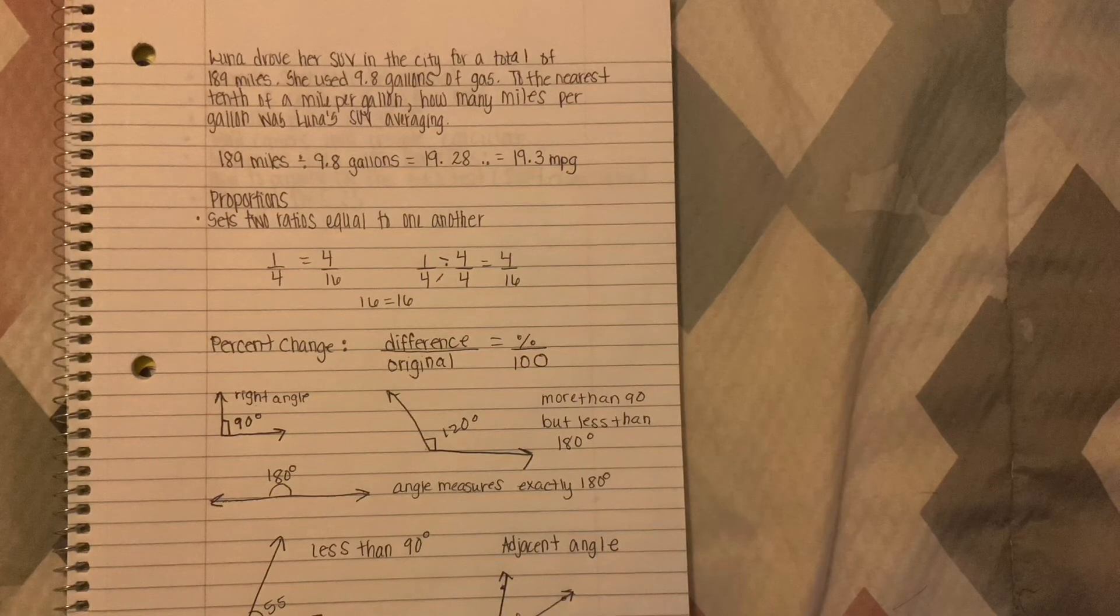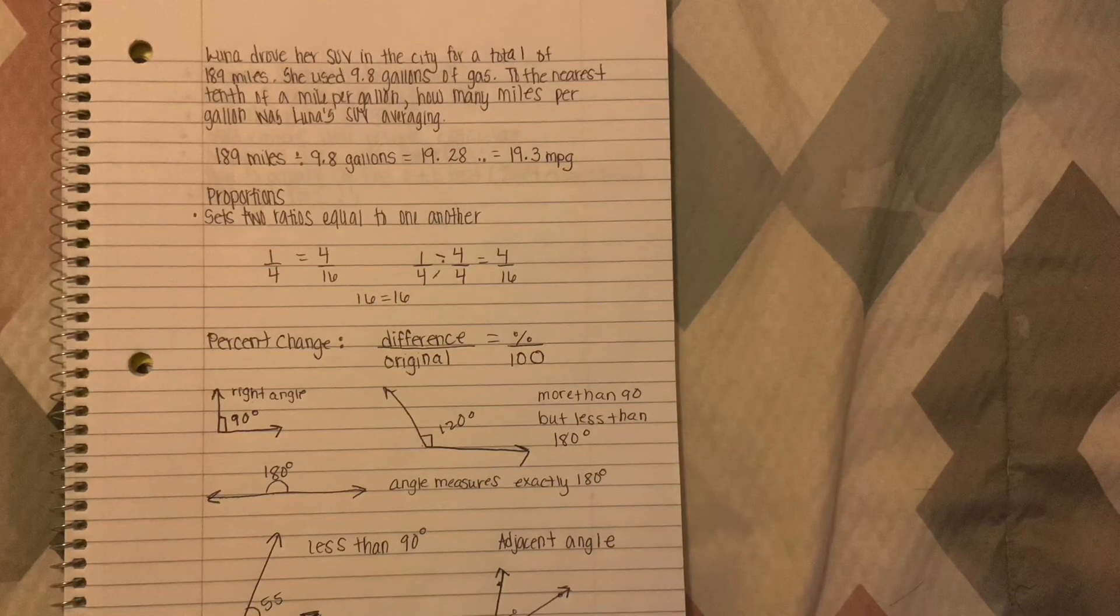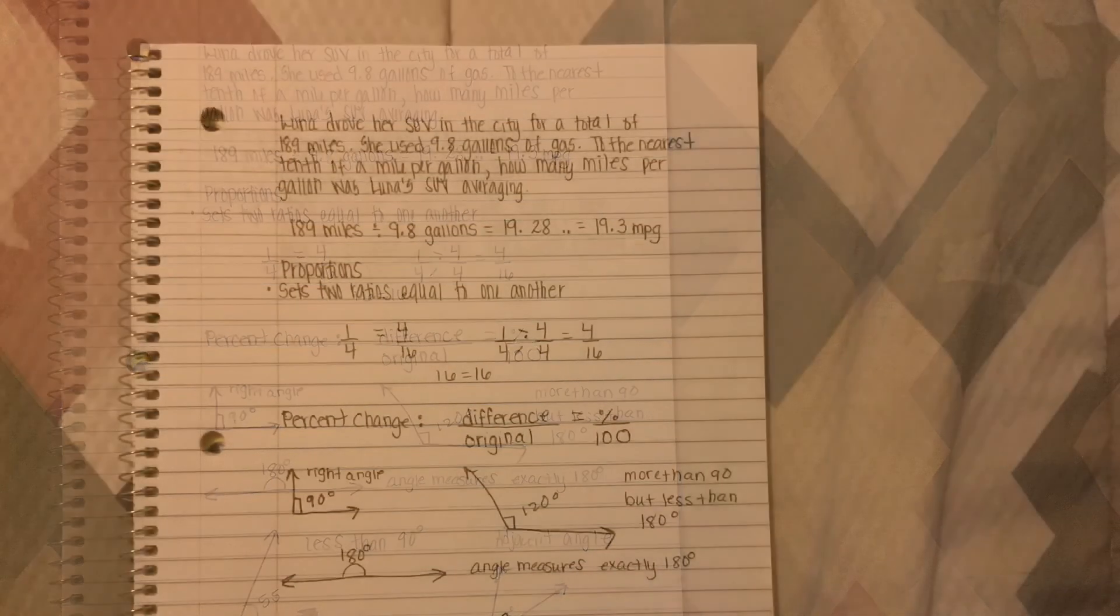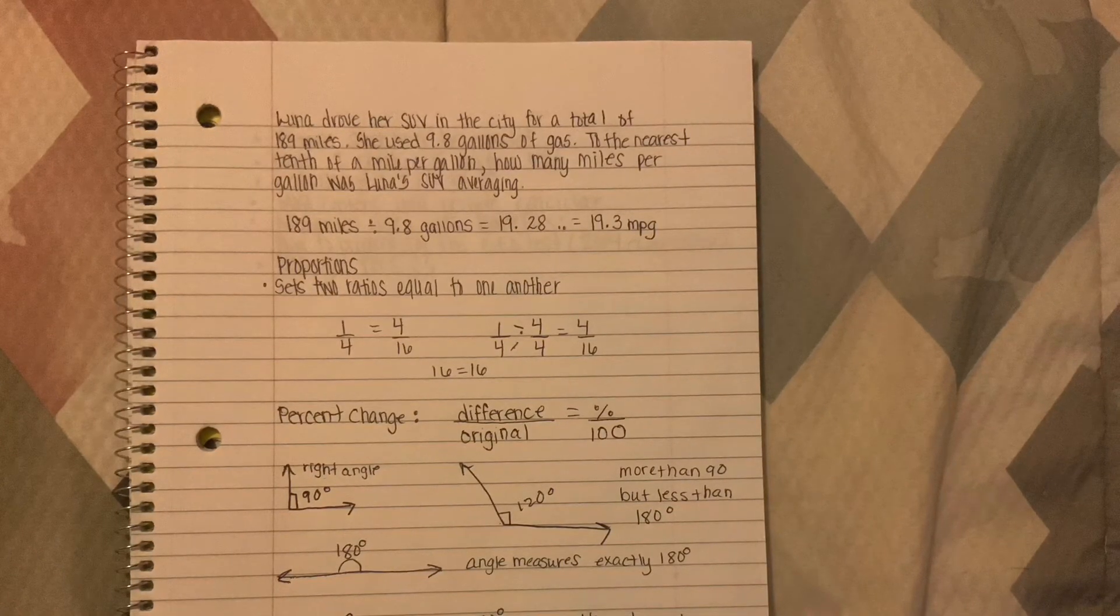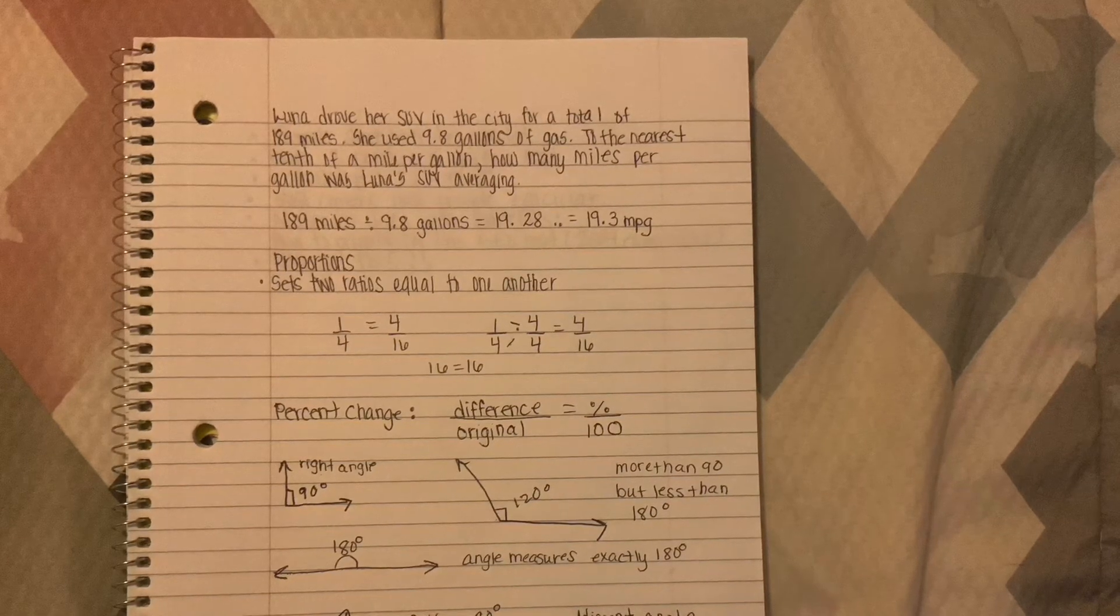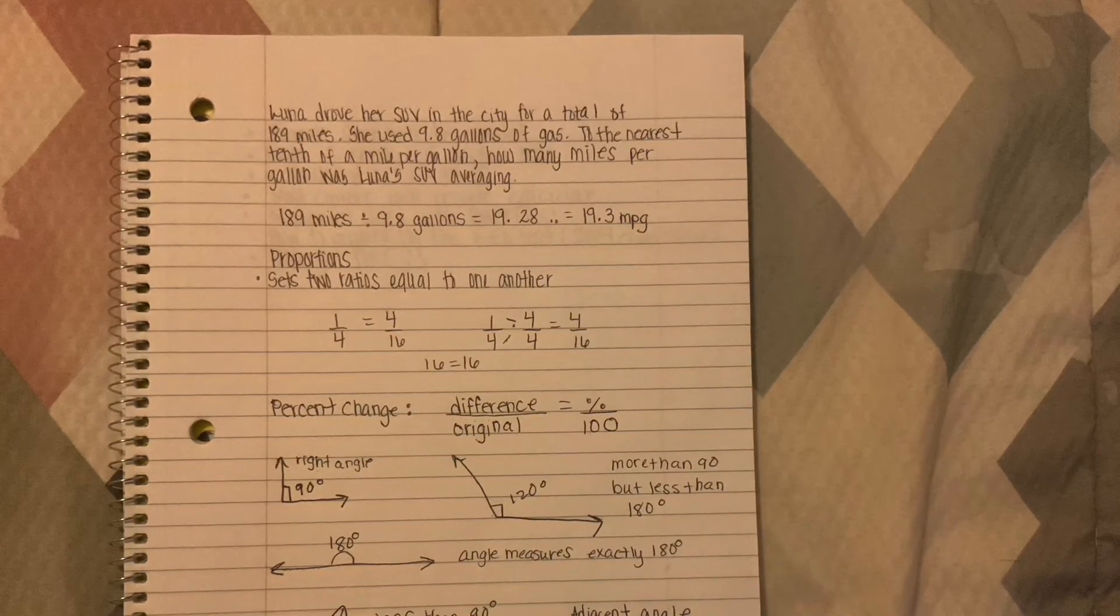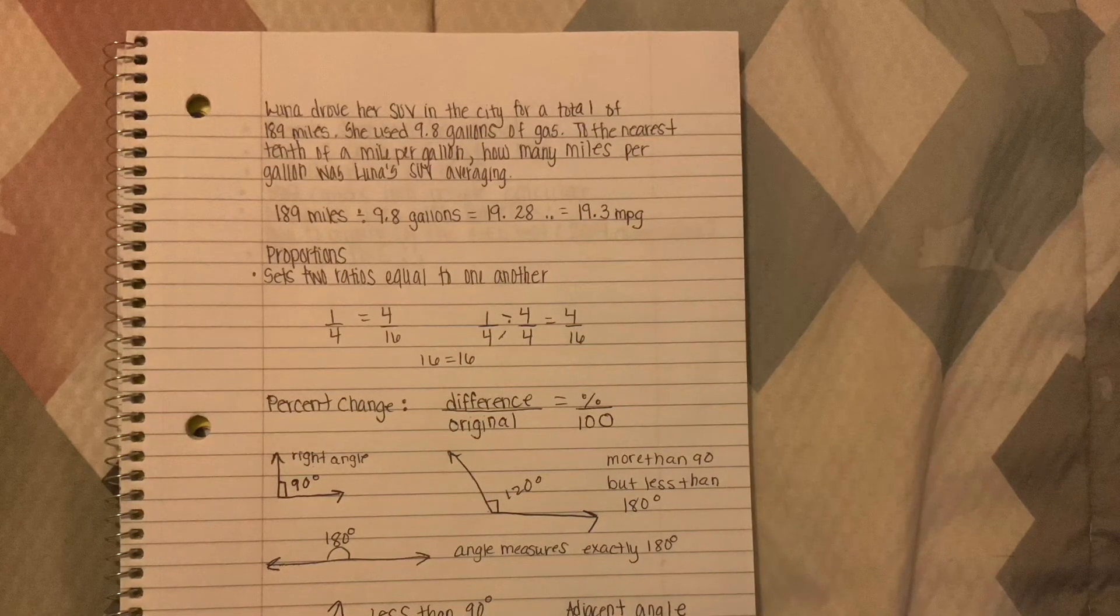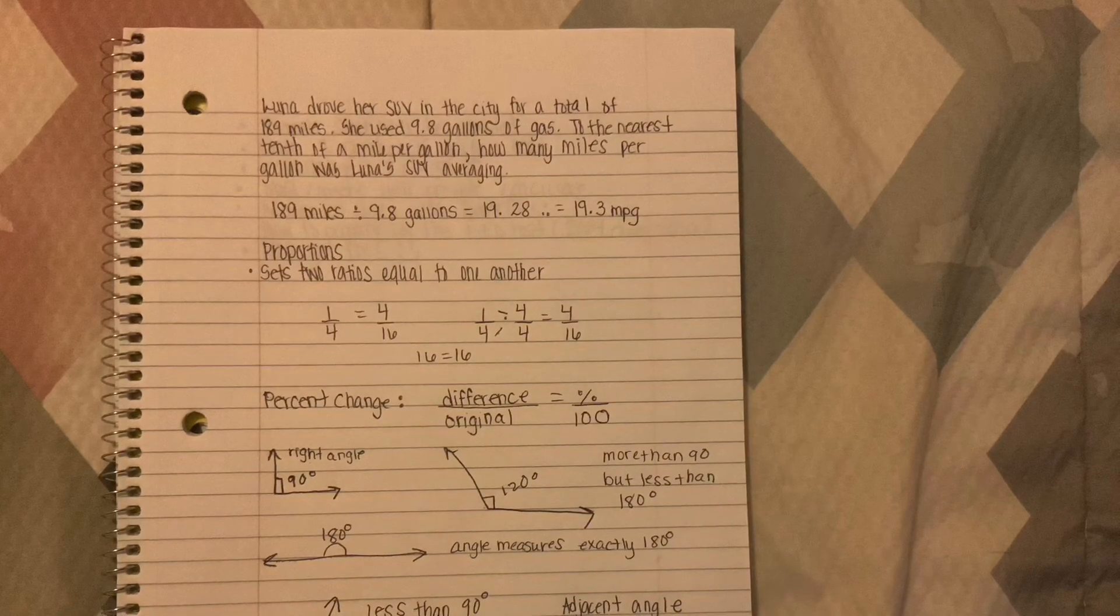Moving on to angles. This first angle on the left, a right angle measures 90 degrees. An obtuse angle measures more than 90 degrees but less than 180 degrees. As you can see, I have 120 degrees, that is more than 90 and less than 180. When dealing with a straight line, that is always going to give you a measurement of 180 degrees. An angle that measures at 180 degrees, that is what it measures at all the time.